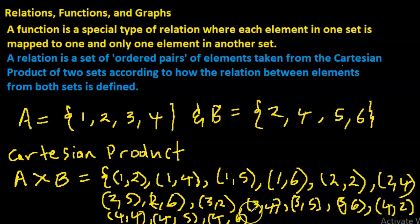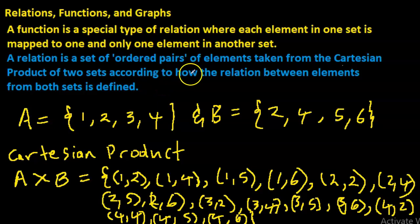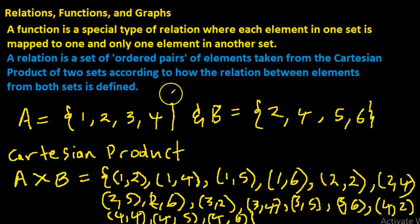Before we talk about relations, you need to know what Cartesian product means. A relation is a set of ordered pairs of elements taken from the Cartesian product of two sets, according to how the relation between elements from both sets is defined.